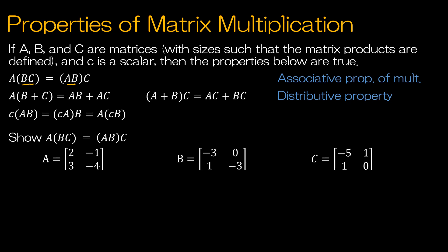That's the associative property we'll look at together. We also have the distributive property: if you have A times B and A times C, you can factor out A and write A times (B plus C). You'd add B plus C first, which reduces work. Similarly, if C is at the end, you can factor it out as long as you're not changing the order. And with a scalar C: C times (AB) equals (CA) times B, or A times (CB) — just don't change the matrix order.